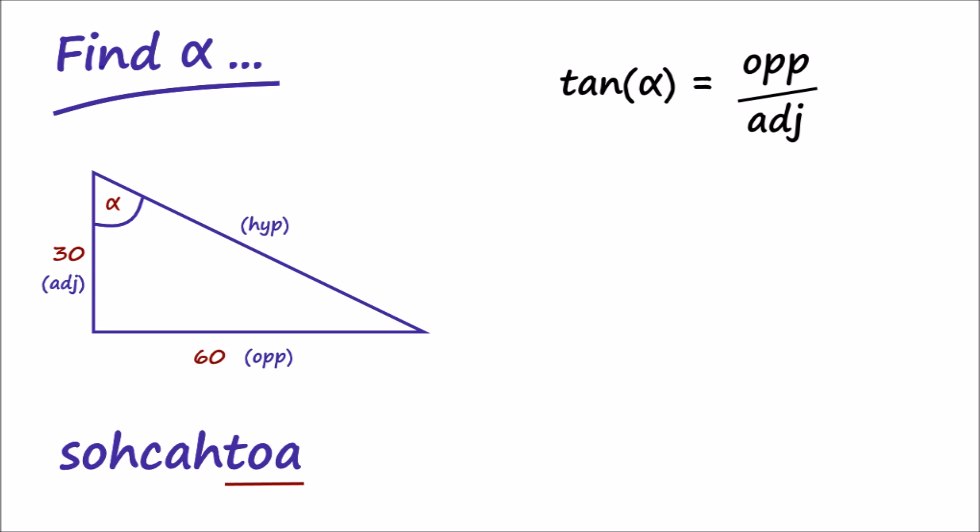So, substituting for known length gives us tan alpha equals 60 over 30, which is equal to 2. Now, to solve for alpha in this case, we need to apply the inverse of a tangent function, rather than the tangent function itself, in order to get alpha on its own, on the left-hand side of the equation.